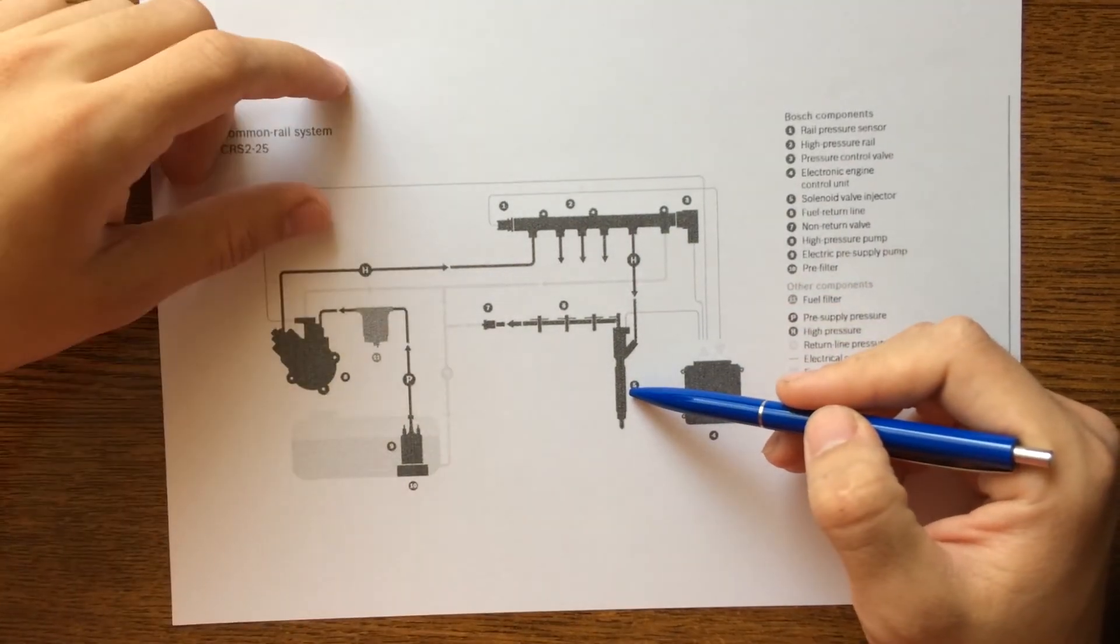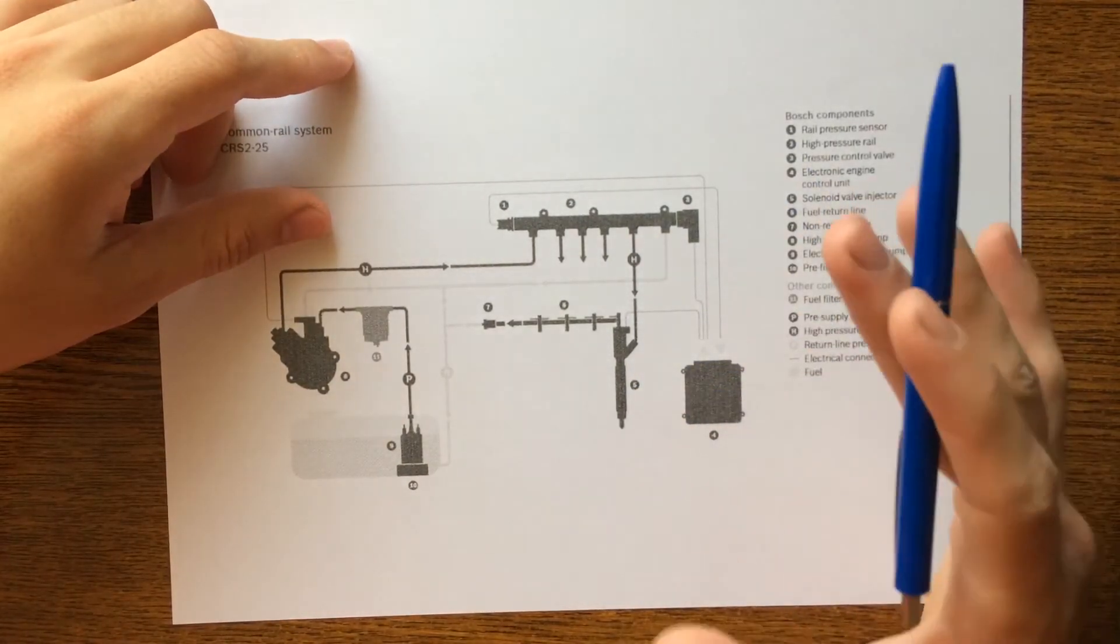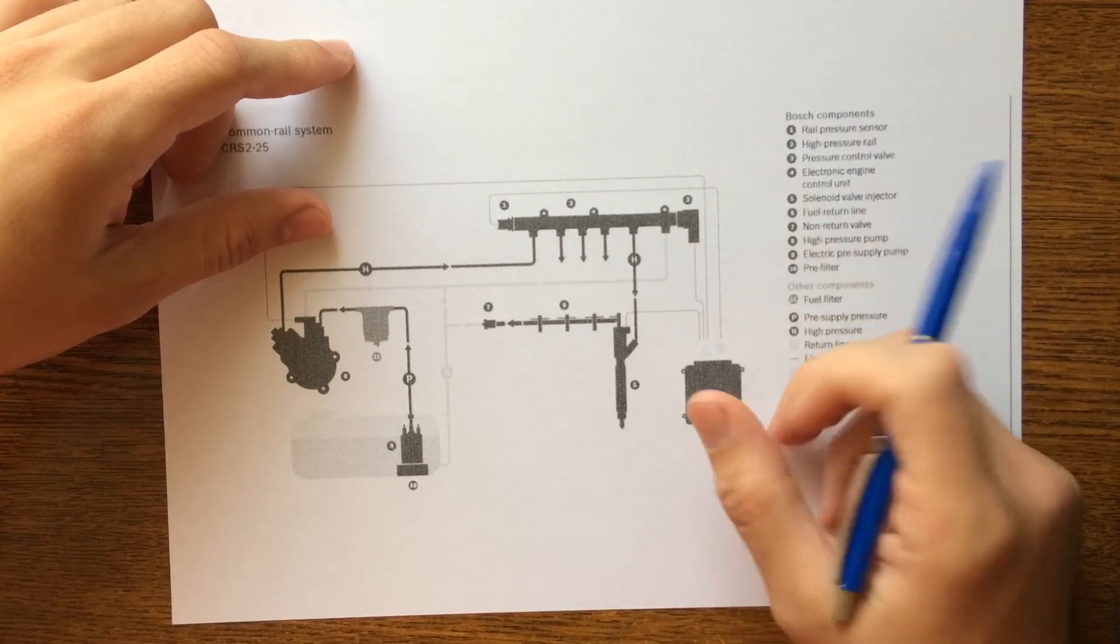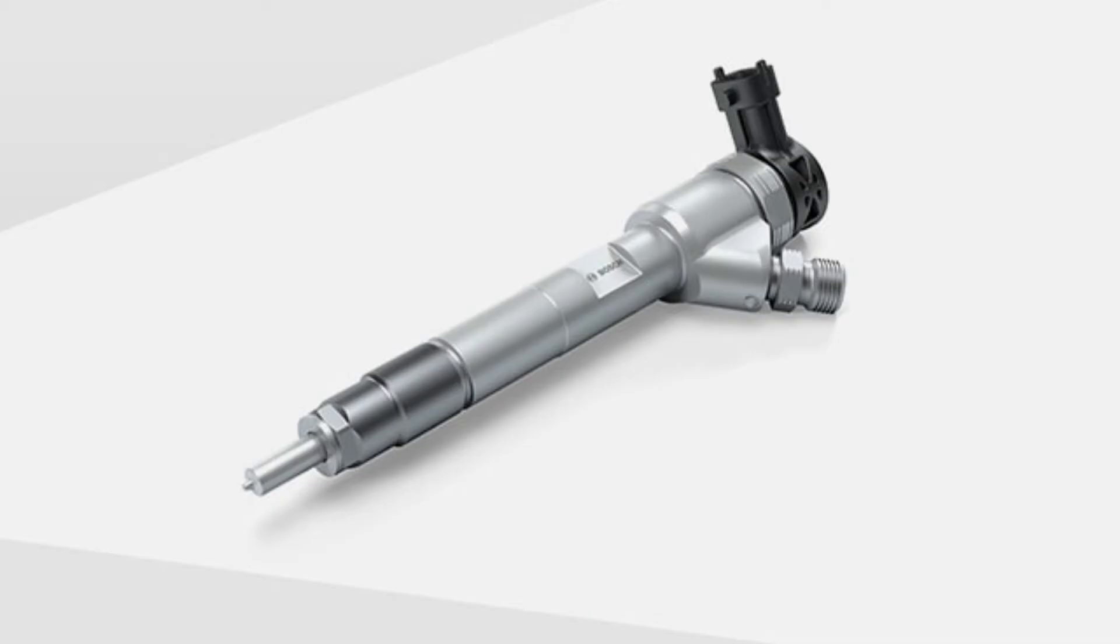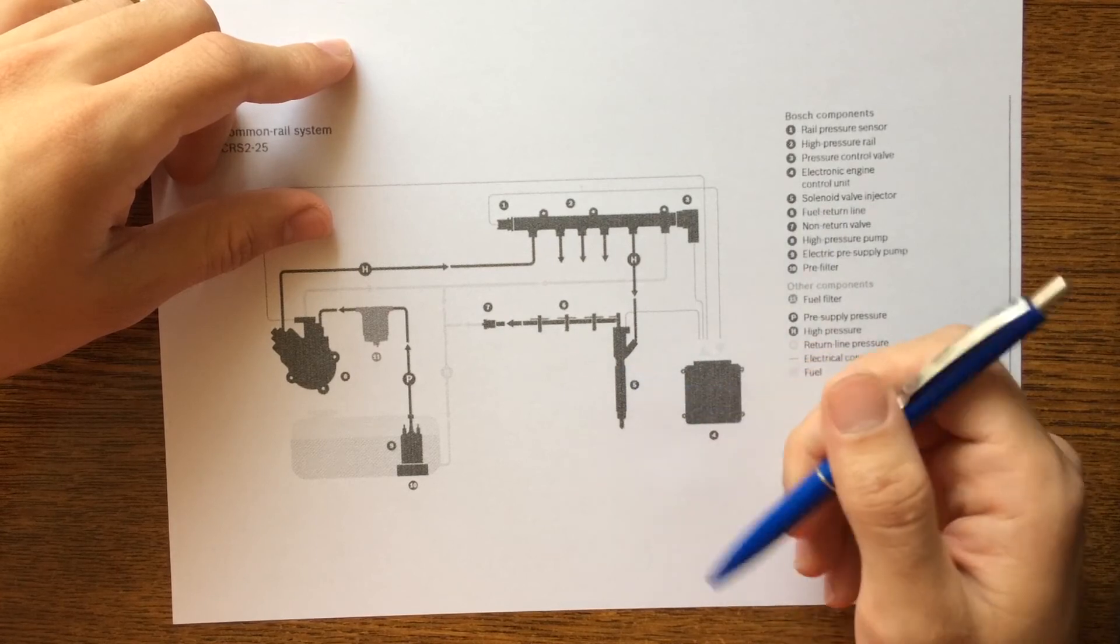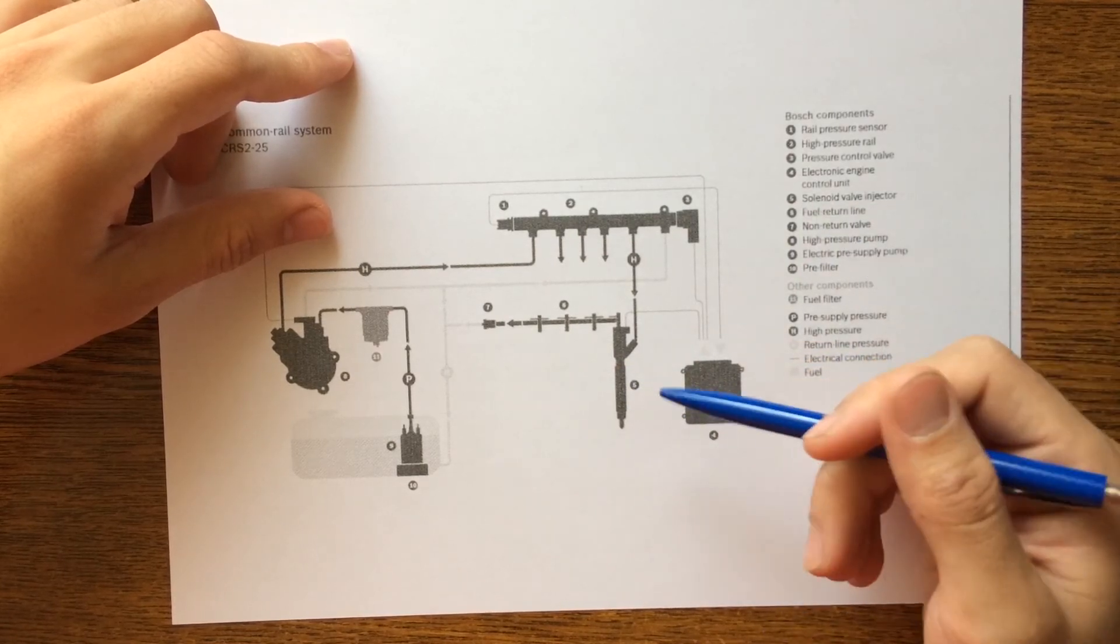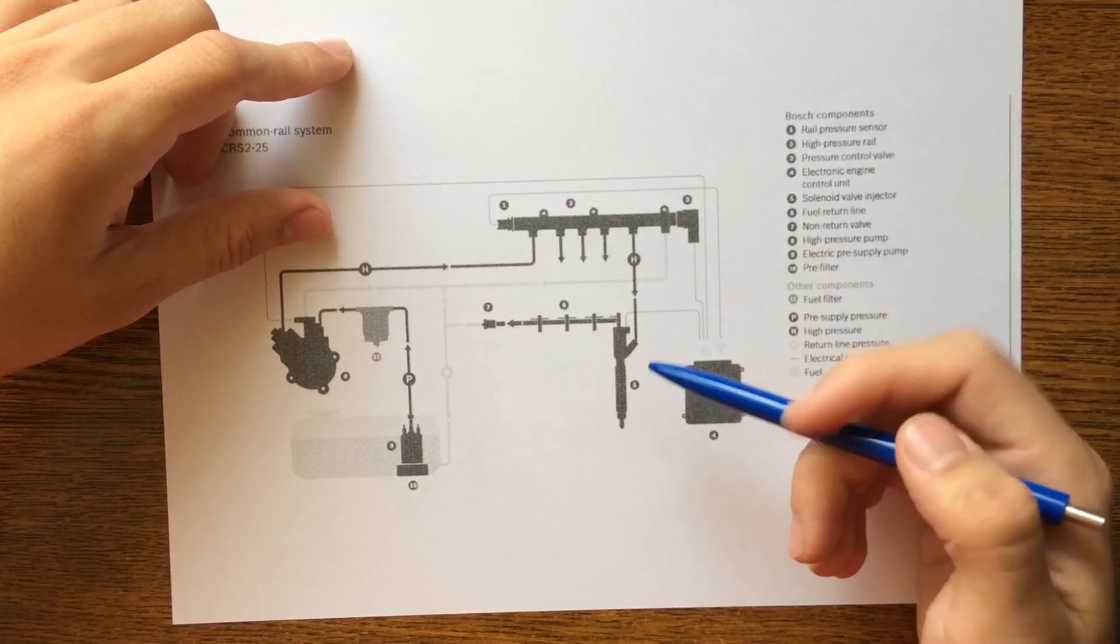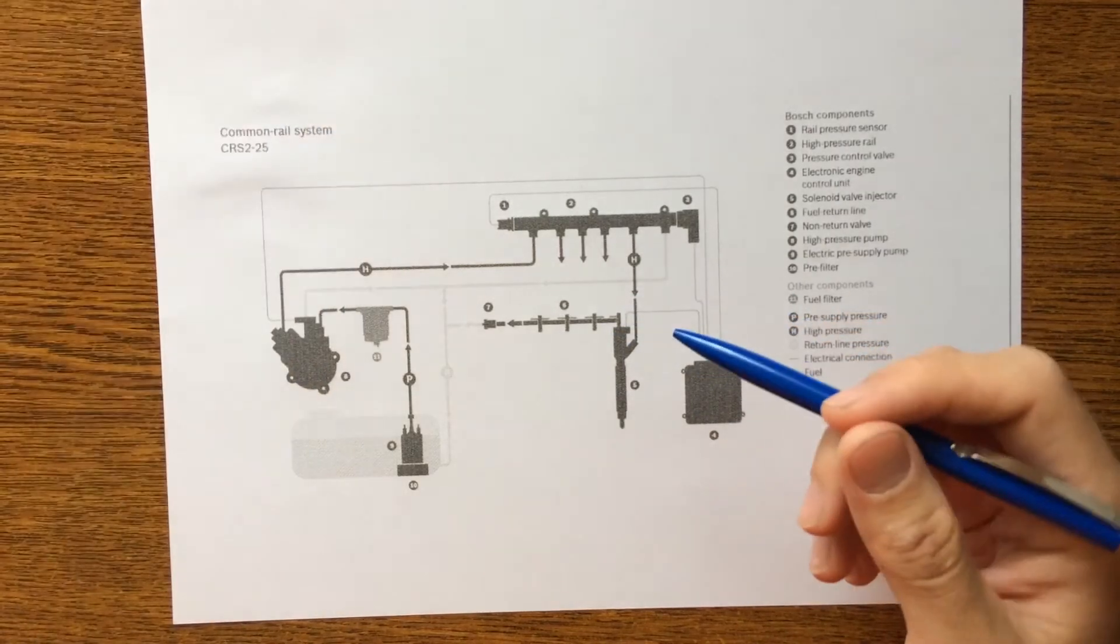From here, the fuel goes to the solenoid injector, which is the third main element. These injectors are built around fast switching solenoid valve injectors with short injection dwell times, which inject the optimum amount of fuel for the driving situation into the cylinders, thereby ensuring economical combustion.